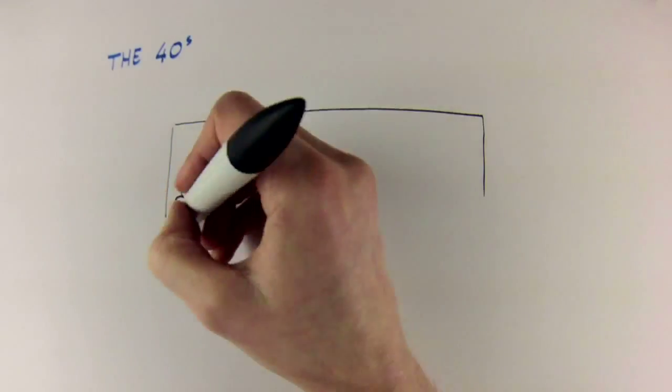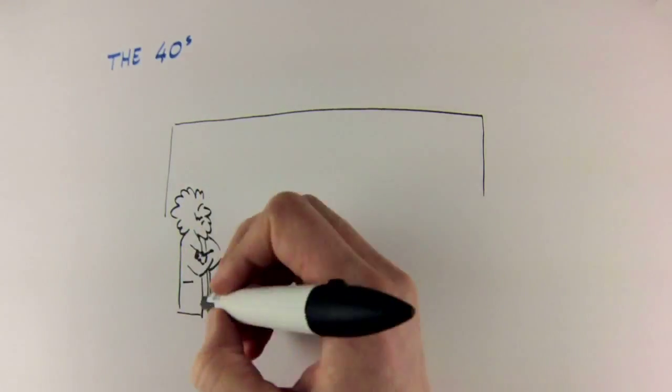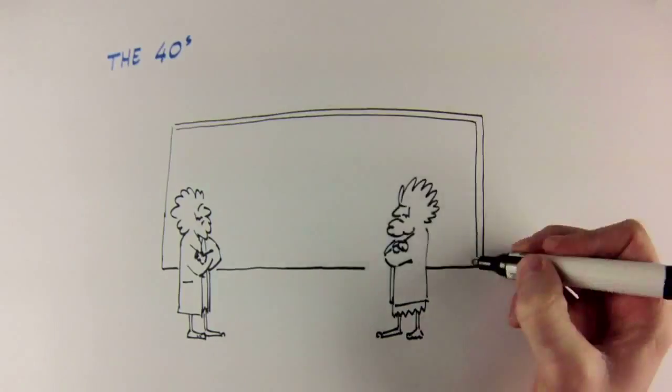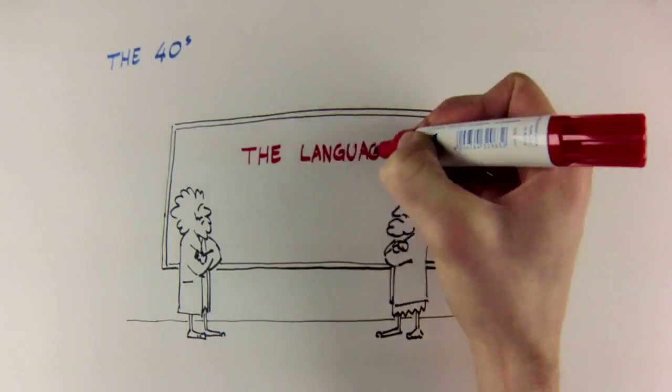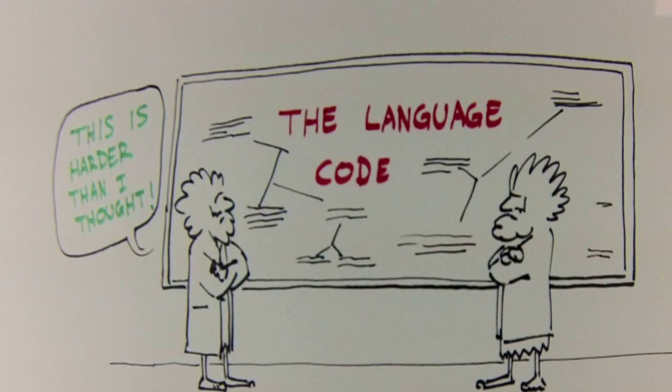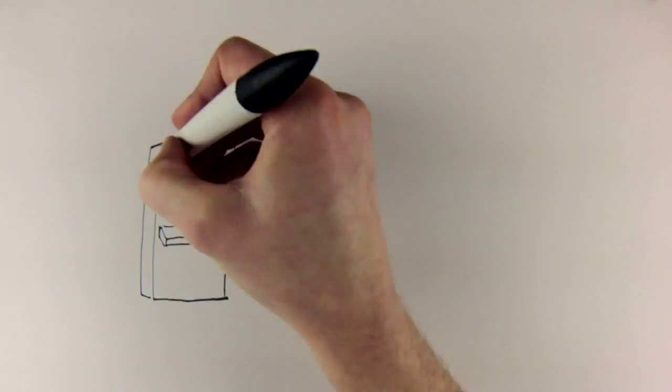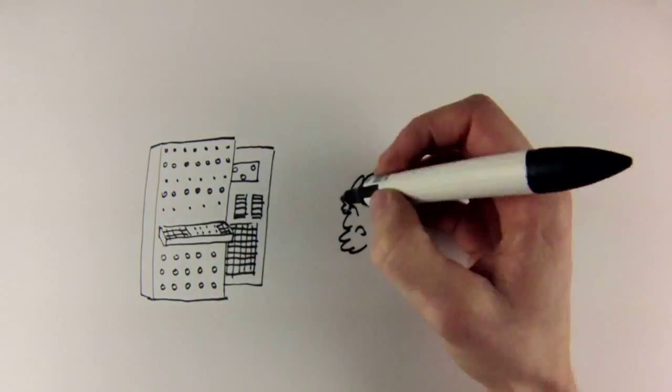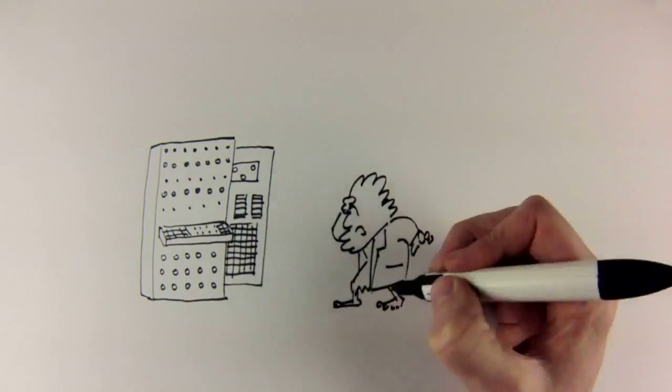Scientists have been working on automatic translation tools since the Second World War. At the time, it was thought that translating into another language was just like cracking an enemy code, and there were plenty of people around who were good at that. So this should be pretty simple, right? Wrong. Human language is very different to code breaking. For starters, it's incredibly complex, so the computers at the time just didn't have the power to handle this.